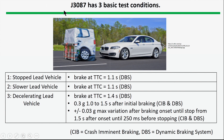J3087 covers a number of different test conditions that are quite important — namely stopped vehicles, slow vehicles, and decelerating vehicles. These are the three things J3087 is intended to cover. Here are some of the details: the time to collision and the braking conditions that are intended, and so forth. There is considerable detail in this particular document.